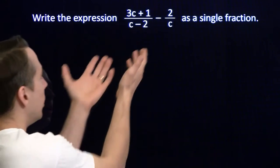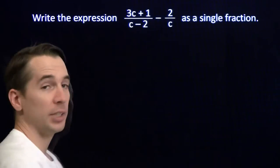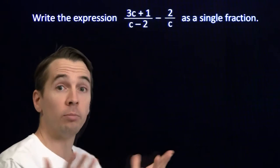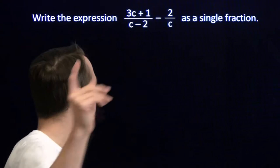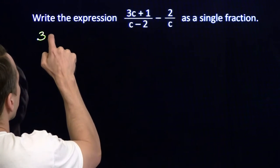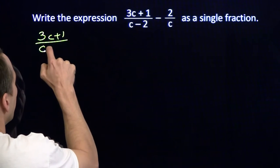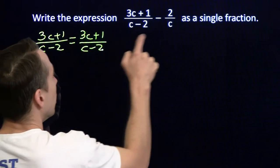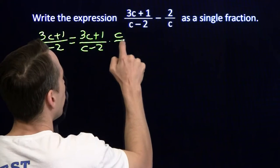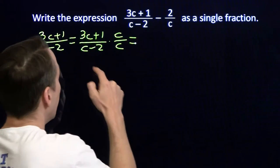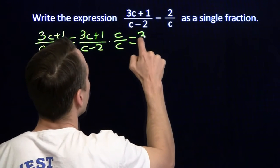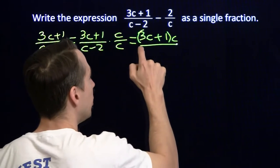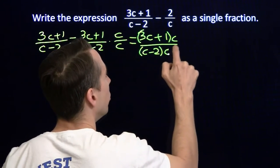So let's go back to our problem. Now we know how to handle this. We're going to find a common denominator by multiplying the denominators — strategically multiplying by 1. We'll start with (3c + 1) over (c − 2), and strategically multiply by 1. We're going to use c times (c − 2) as our common denominator, so we multiply by c over c. In the numerator we'll have (3c + 1) times c, and in the denominator, as planned, we'll have (c − 2) times c.